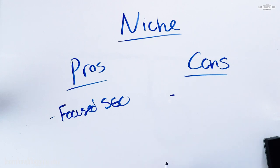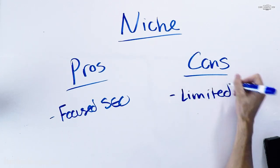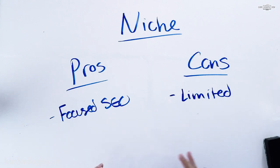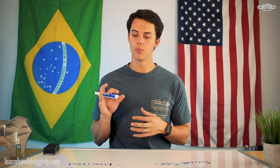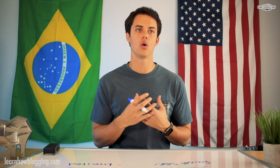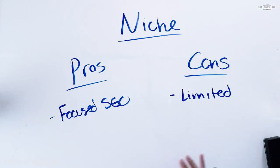One of the biggest cons of a niche blog is that you can be very limited. You could be limited in content creation — maybe you have a very small niche like underwater basket weaving, and how many blog articles can you really write about that? You can also be limited by your audience, since only people interested in that specific niche will want to read your blog.